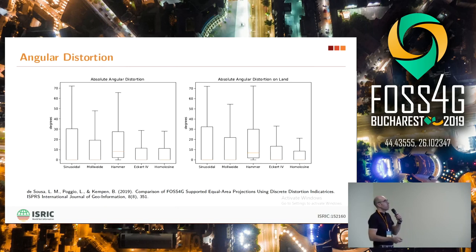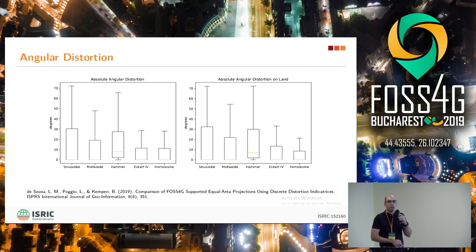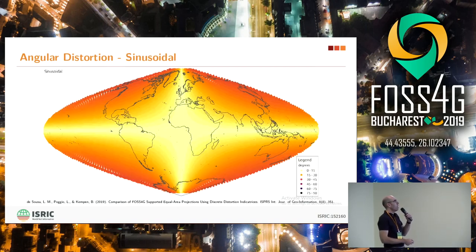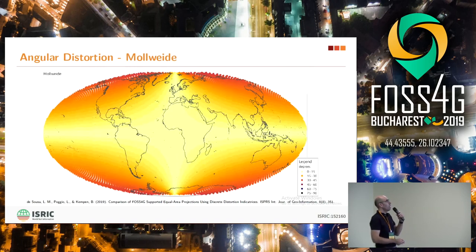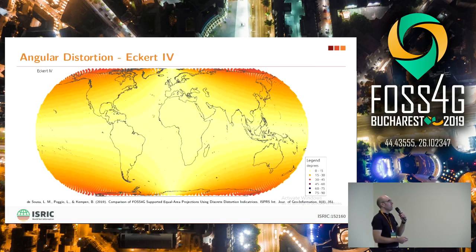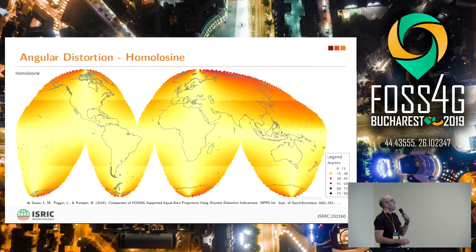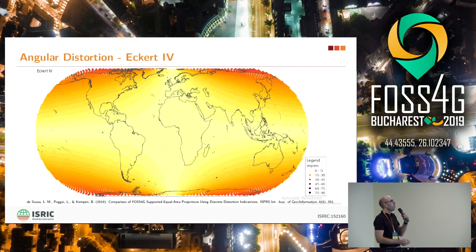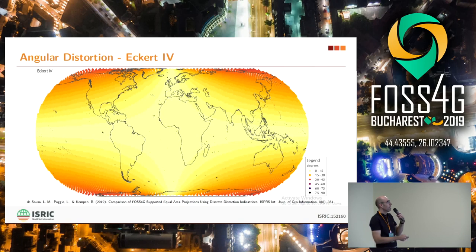These are the results for angular distortion. The Sinusoidal and Hammer perform really badly. Mollweide is so-so. Eckert 4 and the Homolosine perform really well. Mapping this so darker colors mean more distortion: the Sinusoidal doesn't look good at all; the Mollweide looks a little better; the Hammer is really bad. Eckert 4 is more sophisticated and you can see the distortion is compressed toward the higher latitudes. And finally the Homolosine — a relatively clean map, with just east Russia and the Sea of Japan getting a bit of distortion.